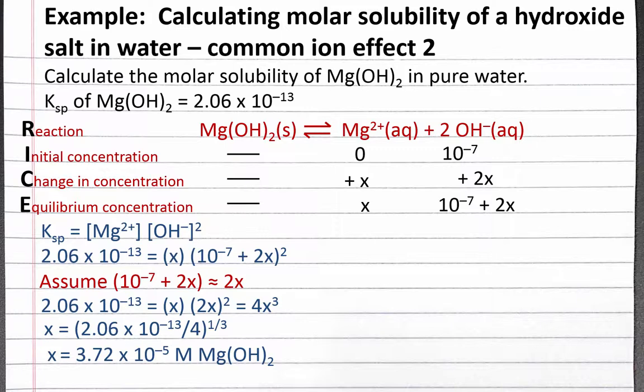To check if this assumption is valid, our percent error should be less than 5%. To calculate percent error, we divide the part of the expression we removed by the original expression times 100%. We assume 10 to the negative 7 was small compared to 2x, so we remove 10 to the negative 7 from the expression.